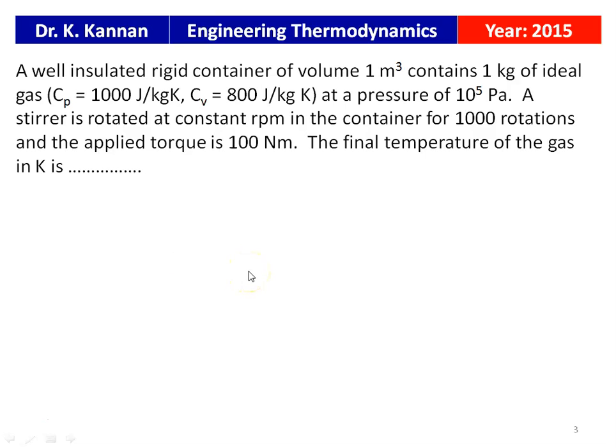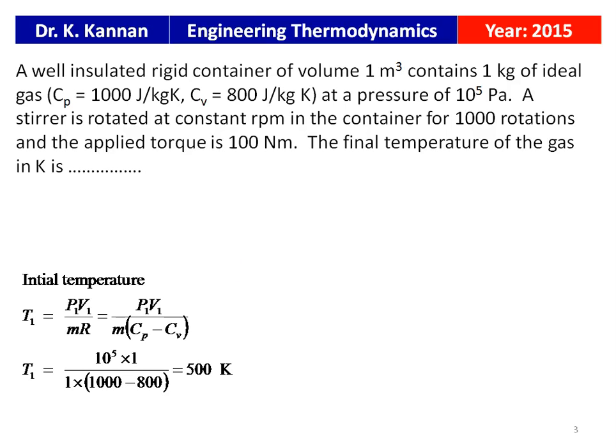This is from the 2015 question paper. A well-insulated rigid container of volume 1 meter cube contains 1 kg of ideal gas with CP = 1000 J/kg·K, CV = 800 J/kg·K, at a pressure of 10^5 Pascal. A stirrer is rotated at constant RPM for 1000 rotations with an applied torque of 100 N·m. The final temperature of the gas in Kelvin is to be calculated.